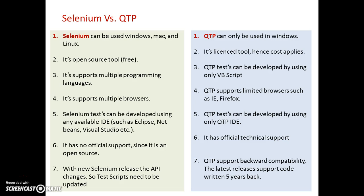The third point is that Selenium supports multiple programming languages. As we saw in a previous video, it supports C#, Java, JavaScript, Objective-C, Perl, PHP, Python, and Ruby. Whereas QTP supports only VBScript, so one must know VBScript to use QTP.